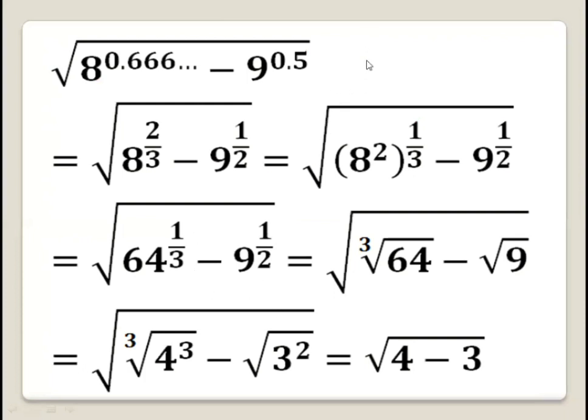We know that a to the power 1 over n is the nth root of a. So 64 to the power 1 over 3 is the cubic root of 64, and 9 to the power half is the square root of 9.